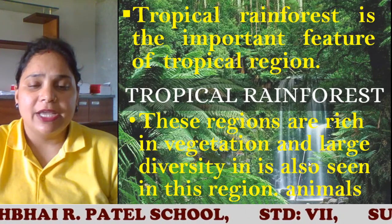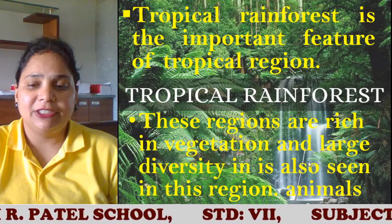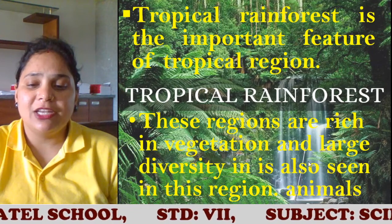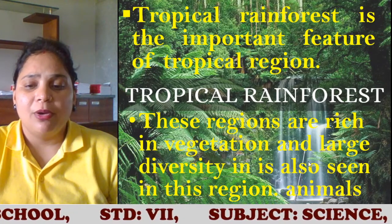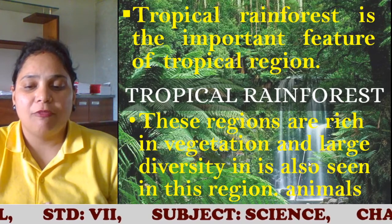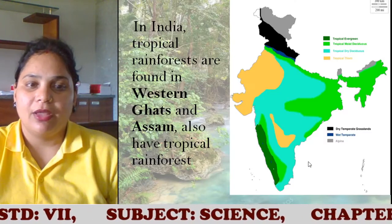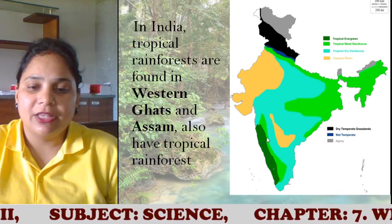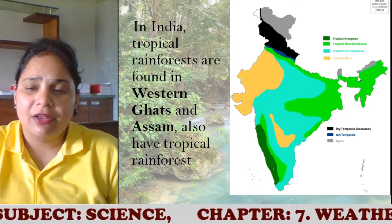The tropical rainforest is the most important feature of the tropical region. These regions are rich in vegetation and large diversity of animals is also seen here. You find a large number of variations in the flora and fauna. Maximum flora and fauna are found in the tropical region. In India, these tropical rainforests are found in the Western Ghats and Assam.